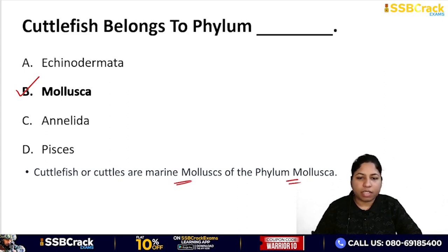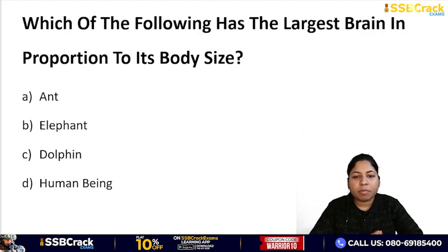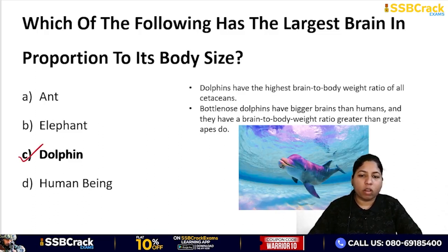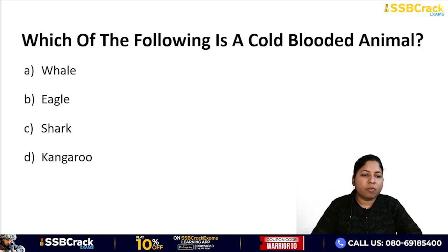Next question: which of the following has the largest brain in proportion to its body size? Options: ant, elephant, dolphin, or human being. The correct answer is dolphin. Dolphins have the highest brain-to-body weight ratio. Bottlenose dolphins have bigger brains than humans in this proportion.